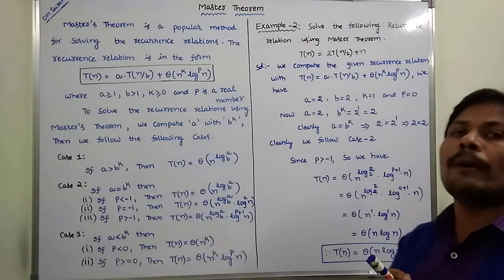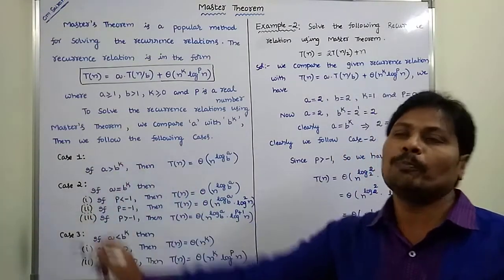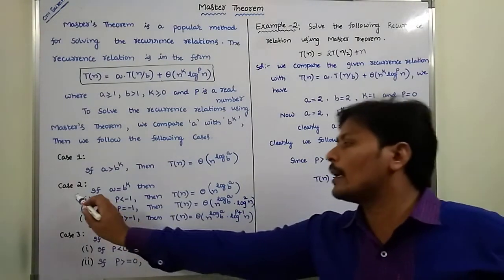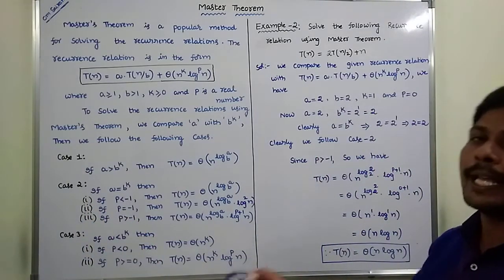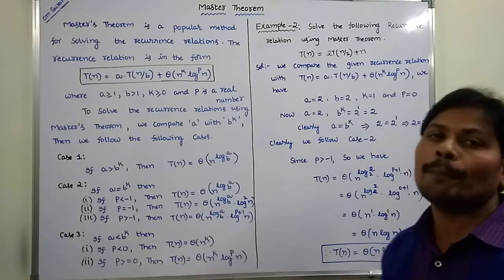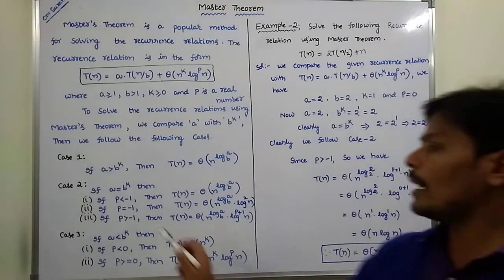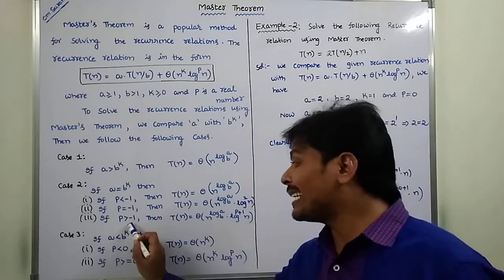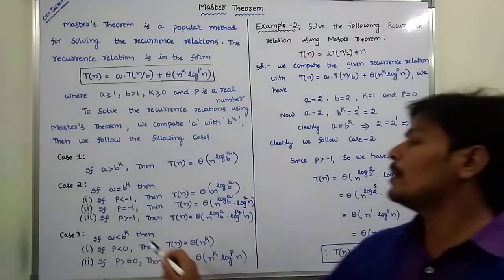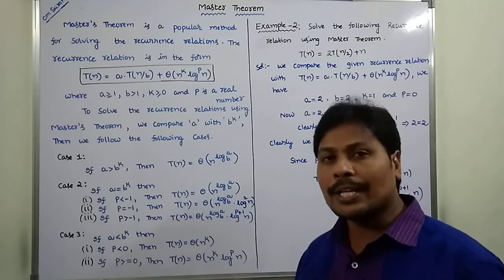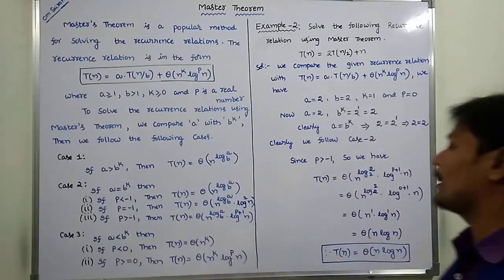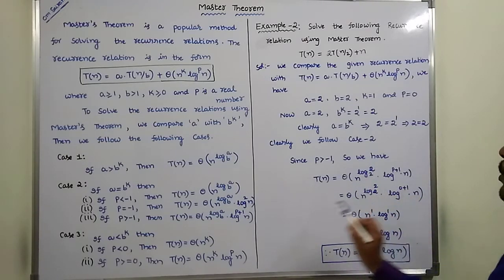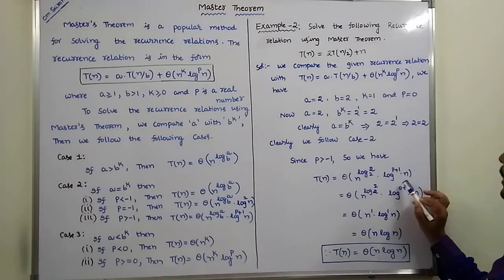Since A = B^k, we have to use Case 2. In Case 2, there are 3 subcases based on the p value. The subcases are: p less than -1, p equal to -1, and p greater than -1. Here p value is 0, and since 0 > -1, the condition is true, so we use the third subcase. The time complexity formula is T(n) = theta(n^(log_B A) * log^(p+1)(n)).